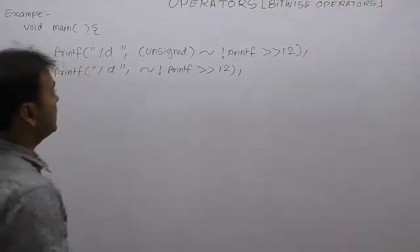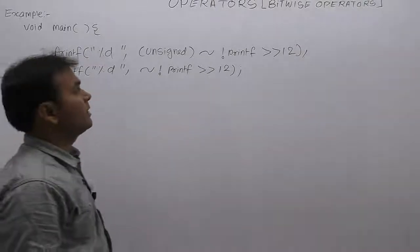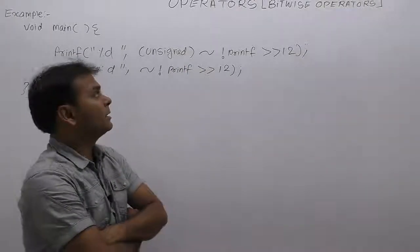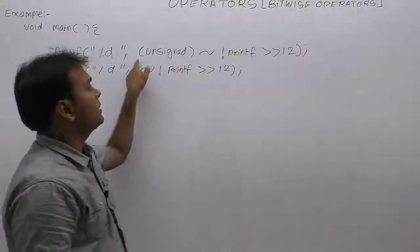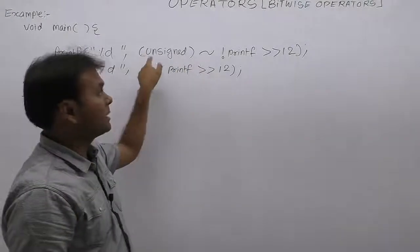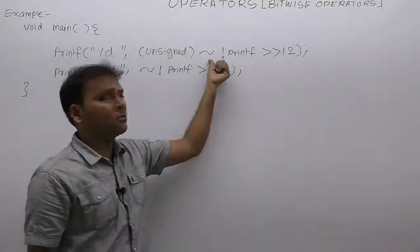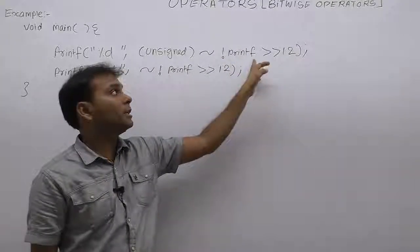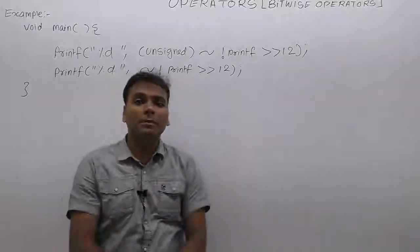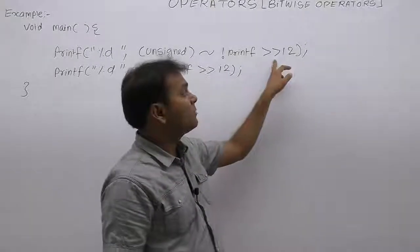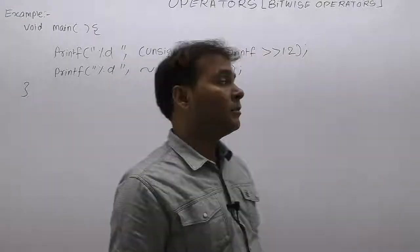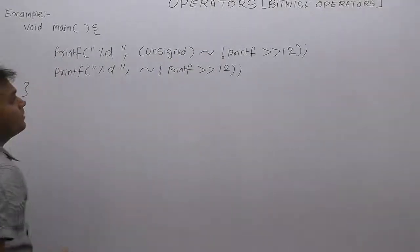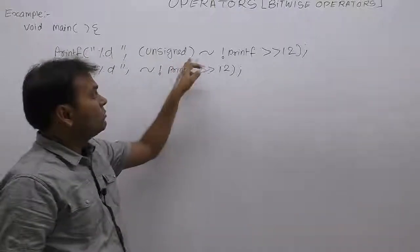The next and most interesting case in bitwise operations is testing different combinations of bitwise operators. In the first expression, we have an unsigned typecast operator, a bitwise ones complement operator, a logical NOT operator, a function name called print_tab, and a right shift by 12. Before solving that expression, note there are four operators, and typecasting is also a unary operator.